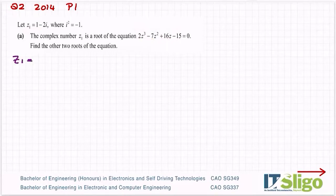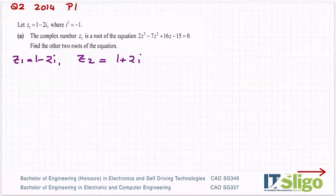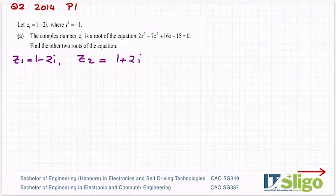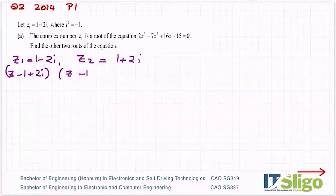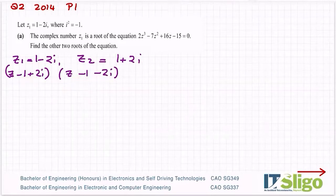So if z1 is equal to 1 minus 2i, then z2 is equal to 1 plus 2i. That's one of them found straight away. I need to find the third one, so I need to form the quadratic that these two roots satisfy and then either long divide it into the cubic or equate coefficients. I can write the roots as factors: z minus (1 plus 2i) and z minus (1 minus 2i), then multiply these together to get my quadratic.